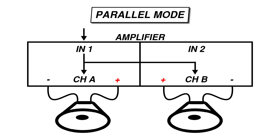Parallel mode is similar but slightly different. You'd use parallel mode if you wanted the same signal to be routed to both amp channels. In parallel mono mode, input 1 is routed to both channel A and channel B. It's effectively the same thing as using a Y cable to connect a single source to both inputs.